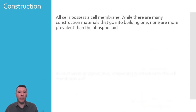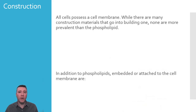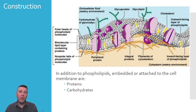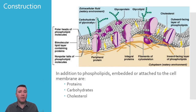Other than the phospholipids, there are a variety of other molecules that are embedded in or attached to the cell's membrane. They include proteins that pass all the way through the membrane, called transmembrane or integral proteins, as well as peripheral proteins that are attached to them. Carbohydrates can be found attached to some of those proteins, called glycoproteins, or they can be attached to lipids, forming glycolipids. A special component of the cell membrane that influences how permeable the membrane is, is cholesterol, which will be explored in more detail in a few moments.